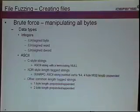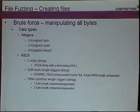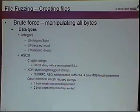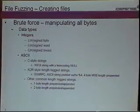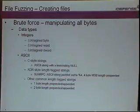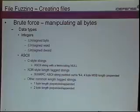When you're creating files, you look at what types of fields you typically find in a file. Of course you have integers in many forms — signed and unsigned bytes, words, DWORDs. Looking at ASCII within a binary file, you'll find C-style null-terminated strings, and XDR length-tag strings where a string has a length tag either before or after it. For example in SunRPC, the ASCII string is padded to a multiple of four bytes with a four-byte big-endian length prepended. You'll see similar patterns — often little-endian — in many Microsoft Office formats, with one-byte or two-byte lengths. It's usually fairly easy to spot.